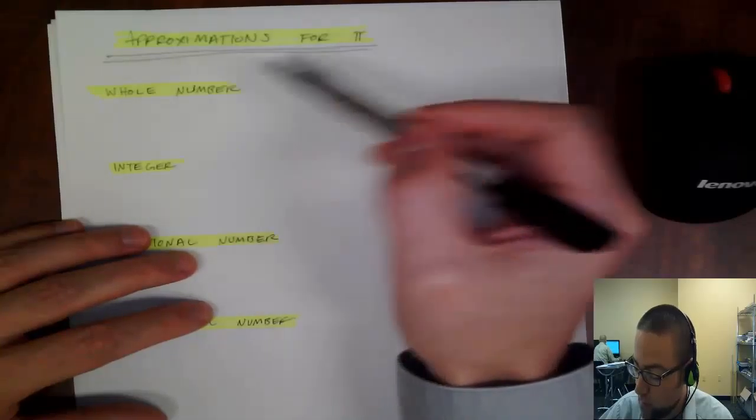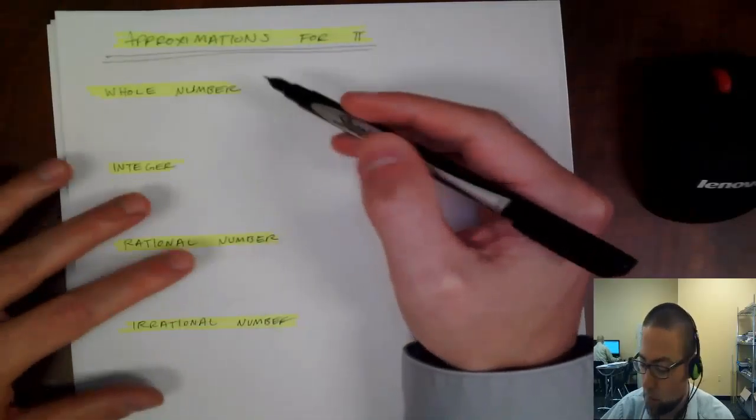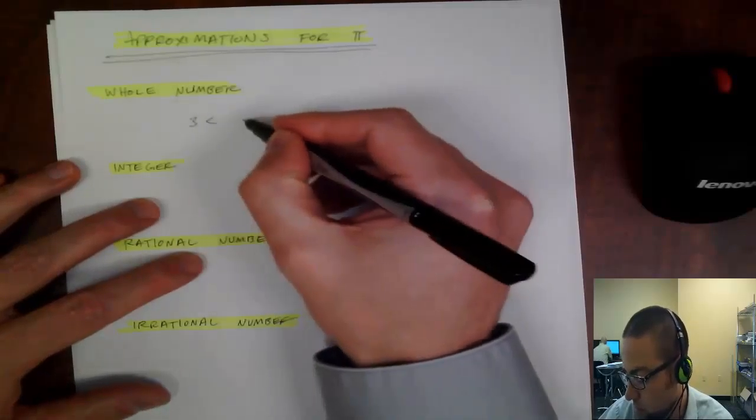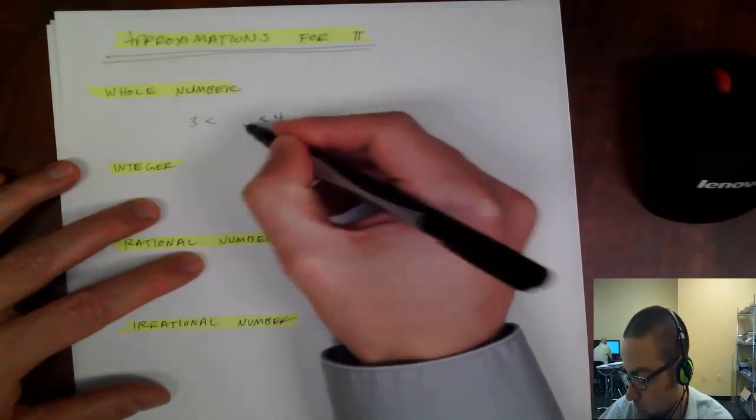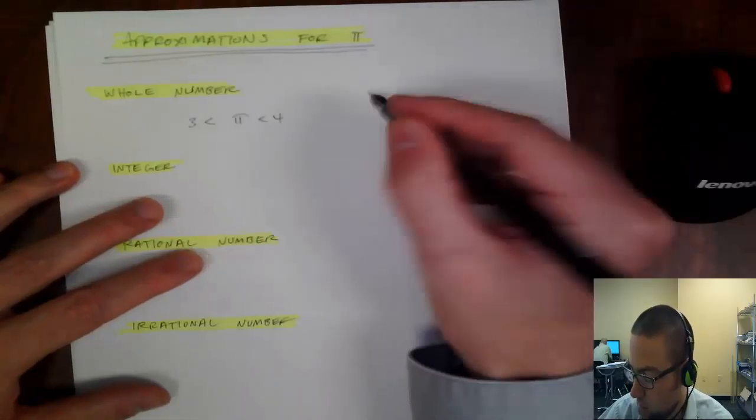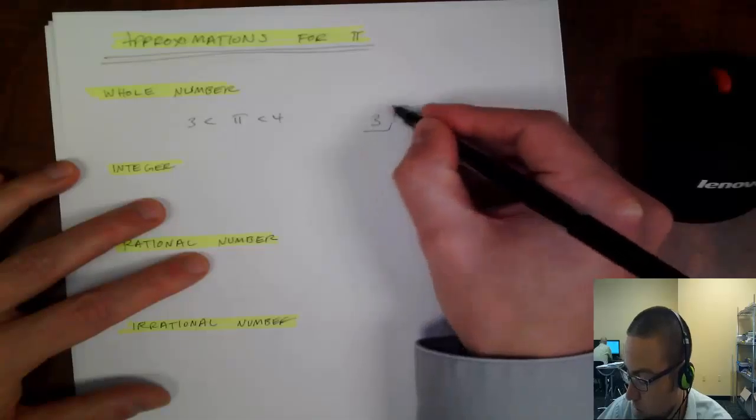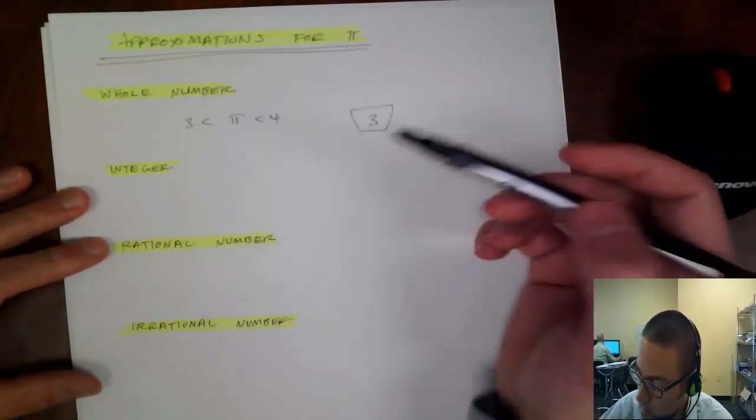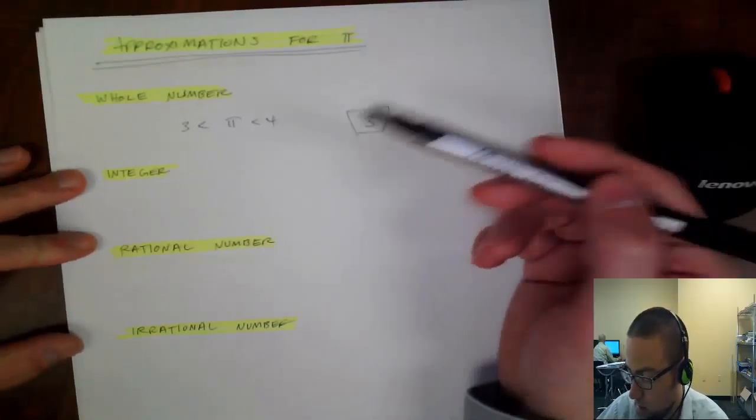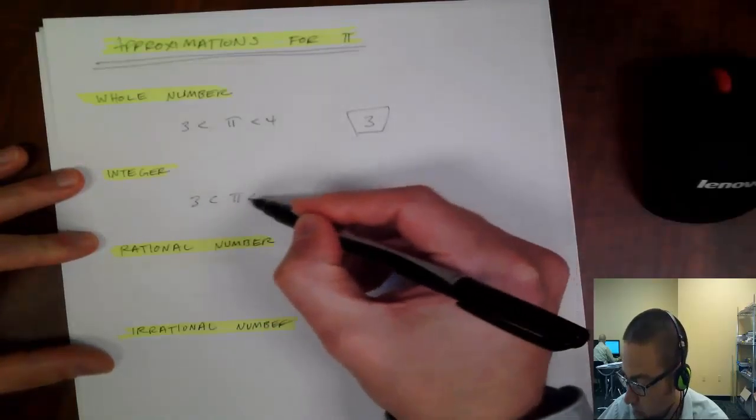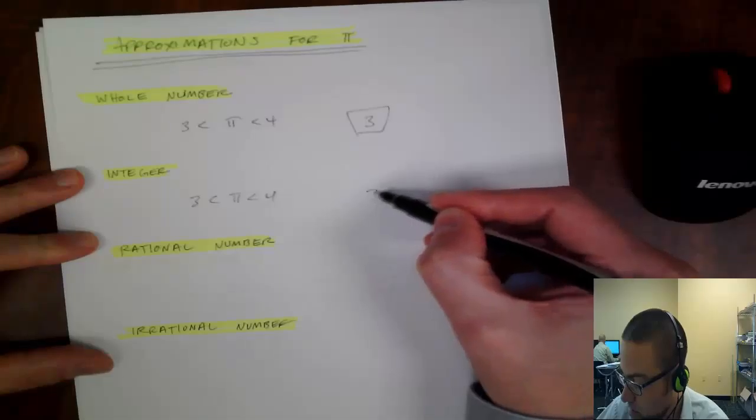So if I want to approximate pi as a whole number, I could just say, well, pi is between 3 and 4, so maybe it's closer to 3 than it is to 4, so maybe 3 would be an approximation. Approximation of pi as an integer, well, it's the same thing, right, between 3 and 4, so let's use 3.